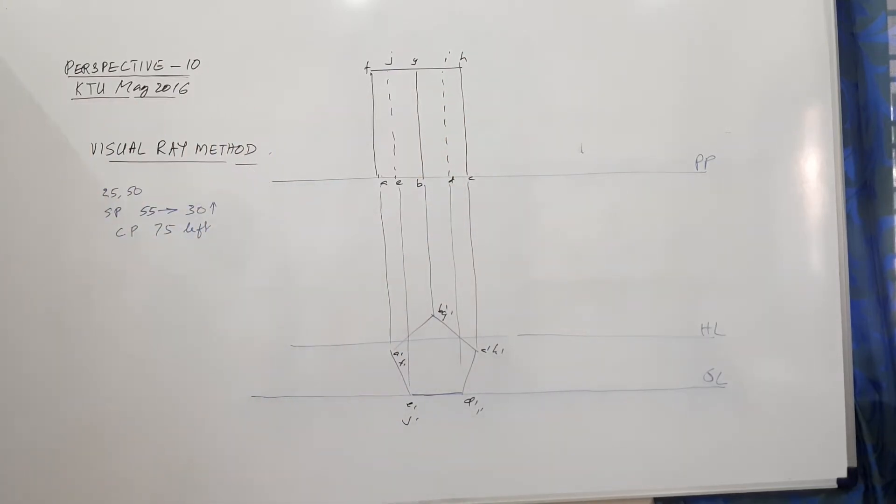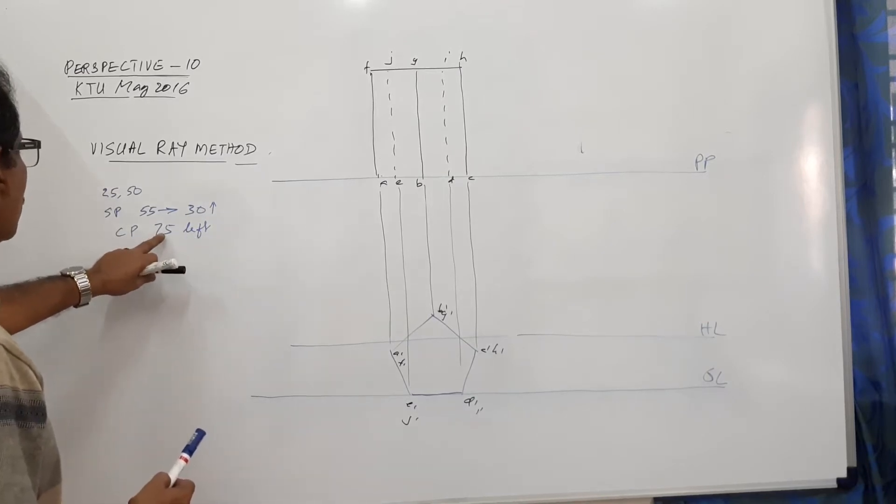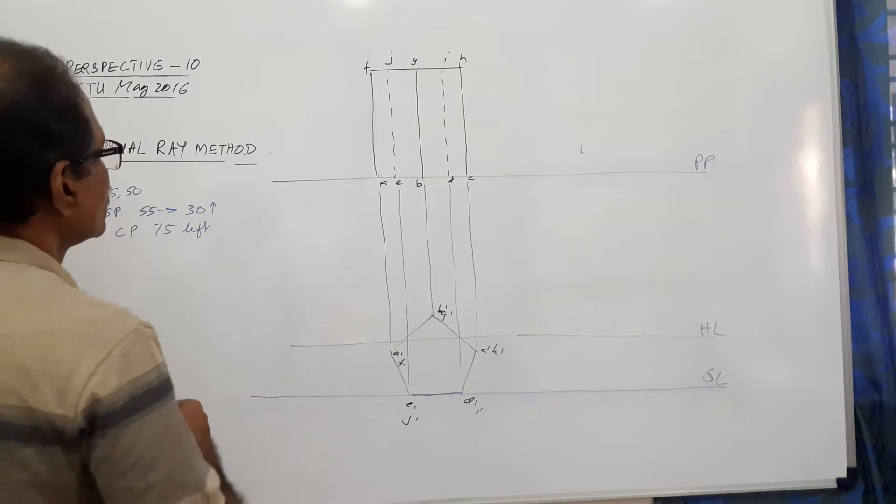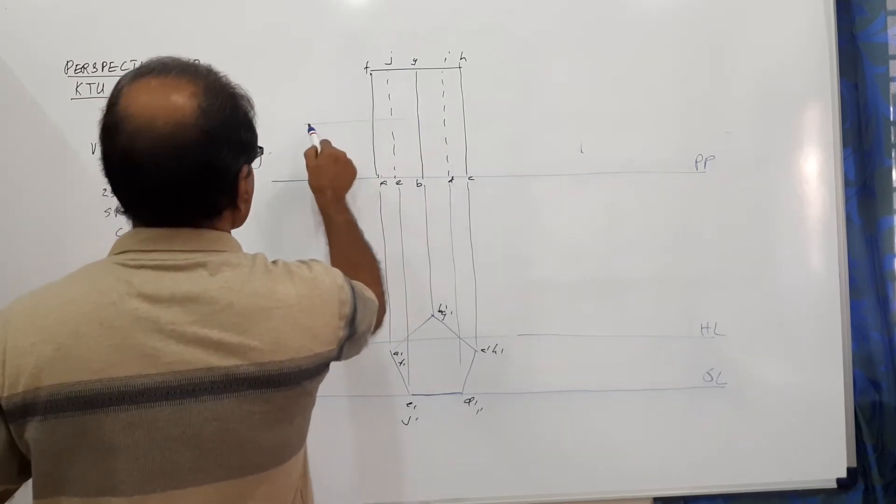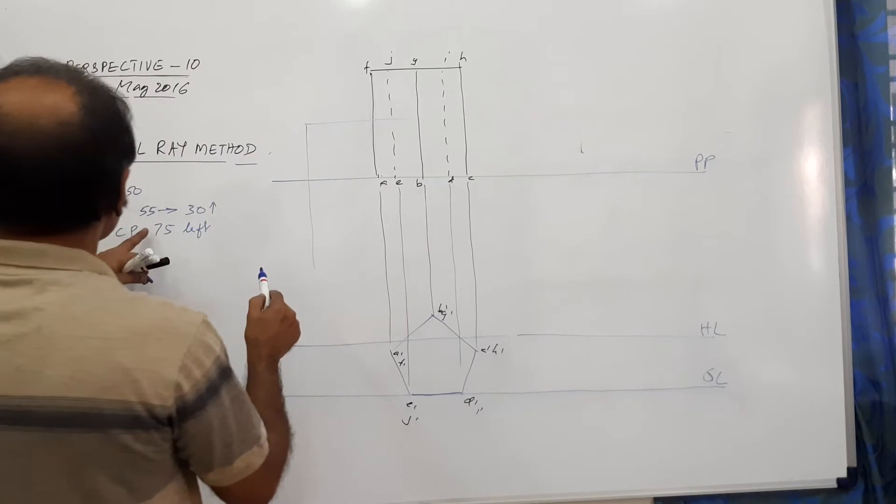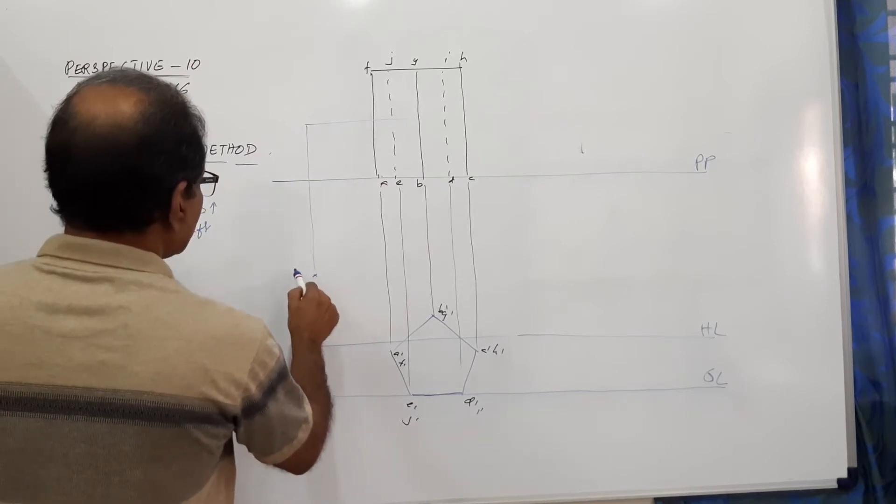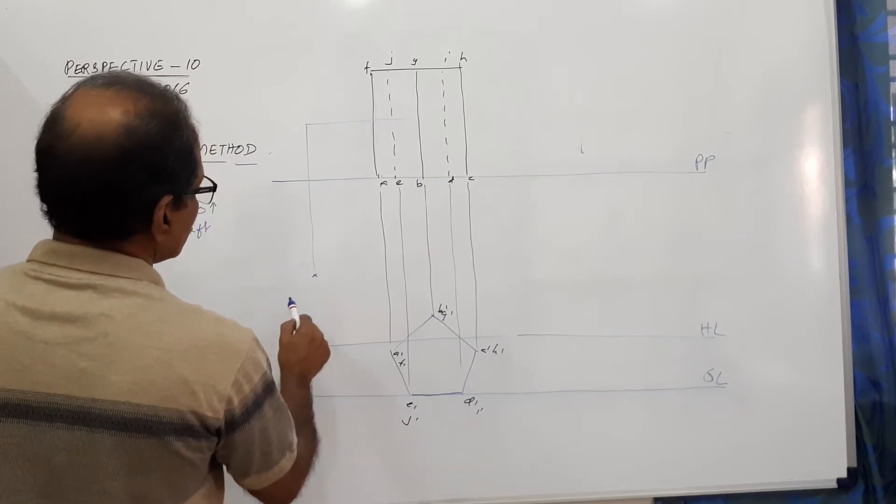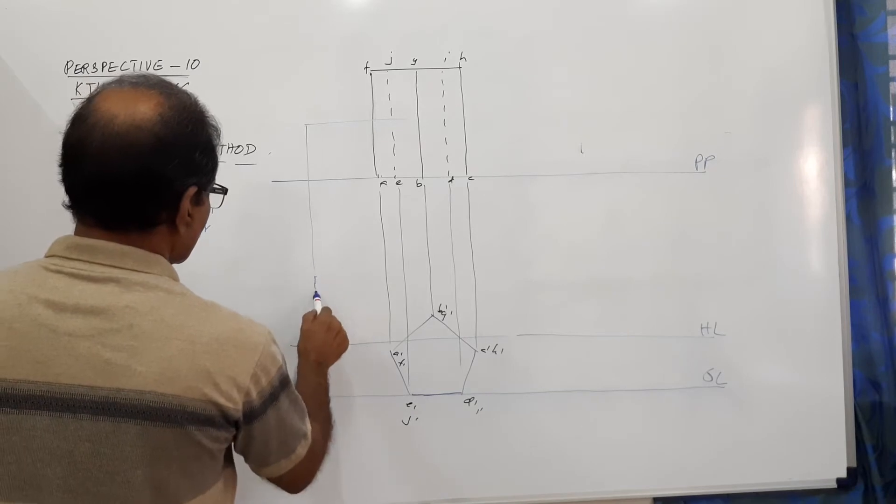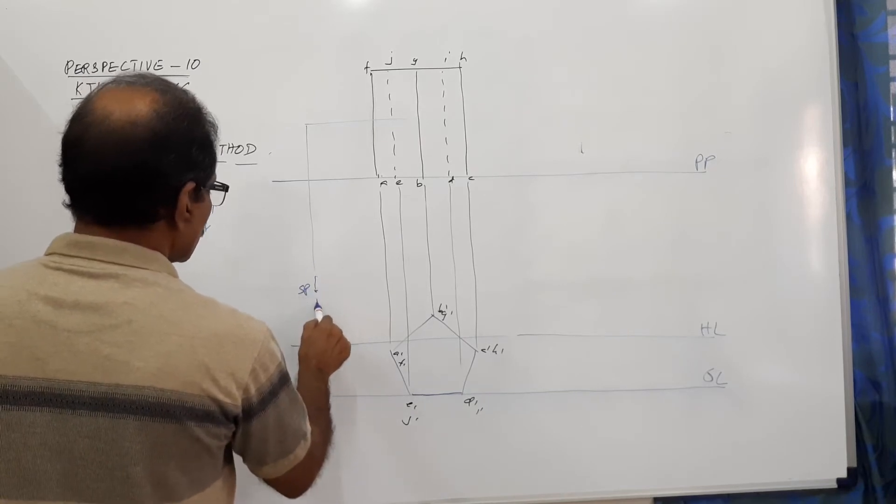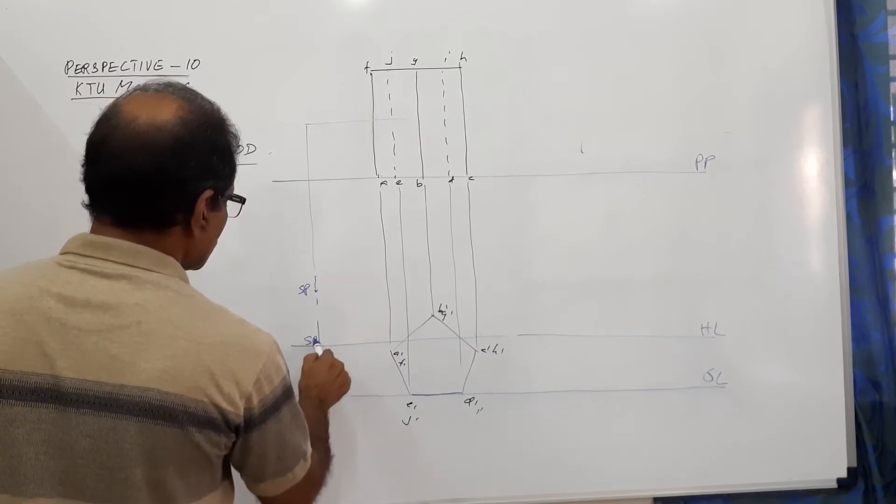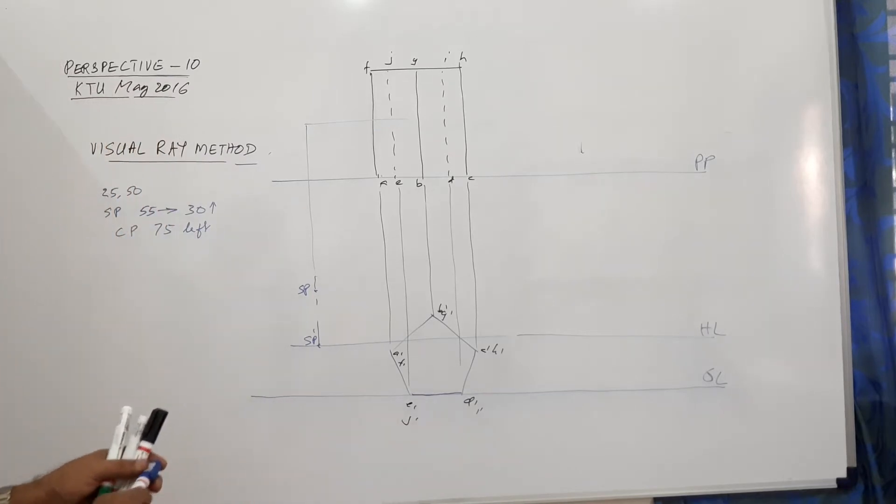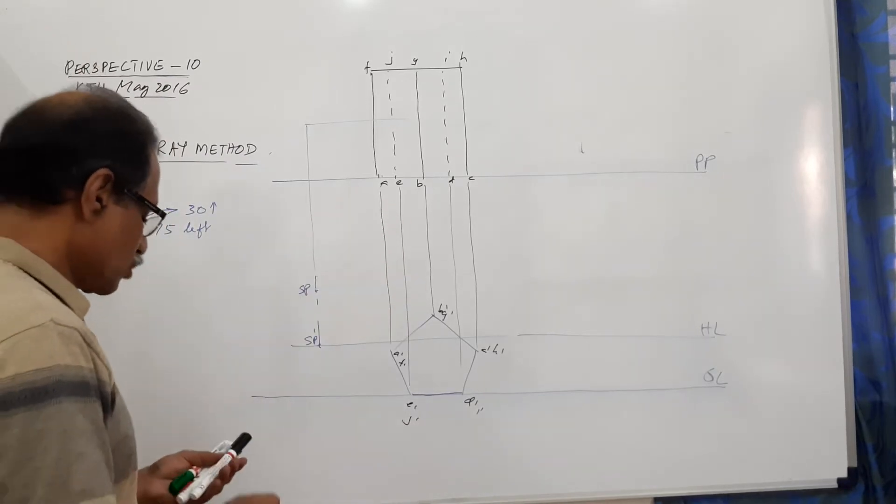Now, where is the station point? Station point is 75 mm to the left of the axis, and 55 mm in front of PP. So that this is SP dash. I am going for visual ray method.